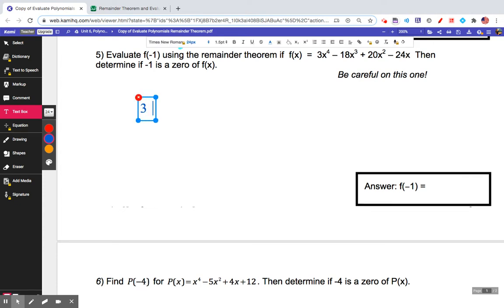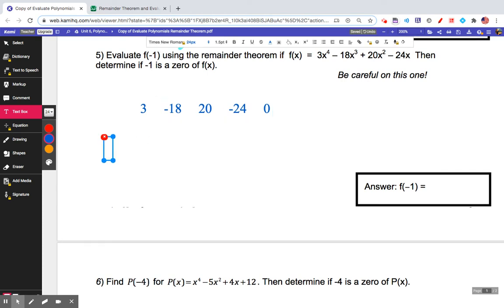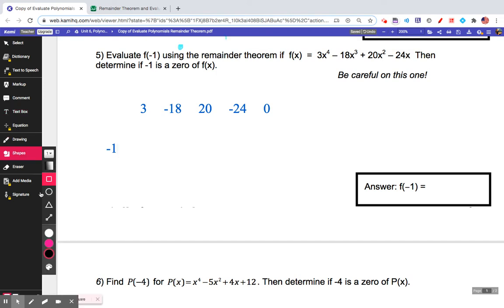They're already in descending order. Don't forget the zero constant. I'm going to put 3, -18, 20, -24, zero, because my constant term is zero. I want to see if -1 is a zero, so I'm going to put -1 outside here. With my shapes tool, I'll grab a line. This is what I'm dividing by, and this is what I'm bringing down.